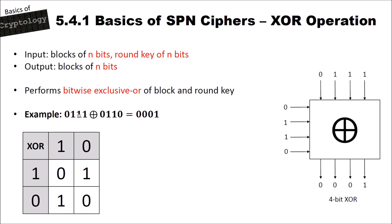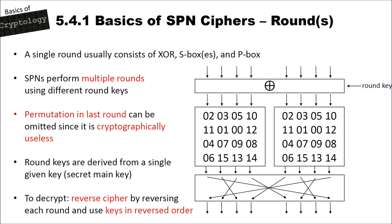Each SPN cipher consists of one or more rounds. A single round usually consists of an XOR, S-box(es), and a P-box. For example: input the block, XOR with round key, apply two 4-bit S-boxes in parallel (returning eight bits total), apply the permutation, and get a new block. Round keys are derived from a single main key using key schedules. For instance, a 32-bit key can be divided into four 8-bit round keys taken sequentially.